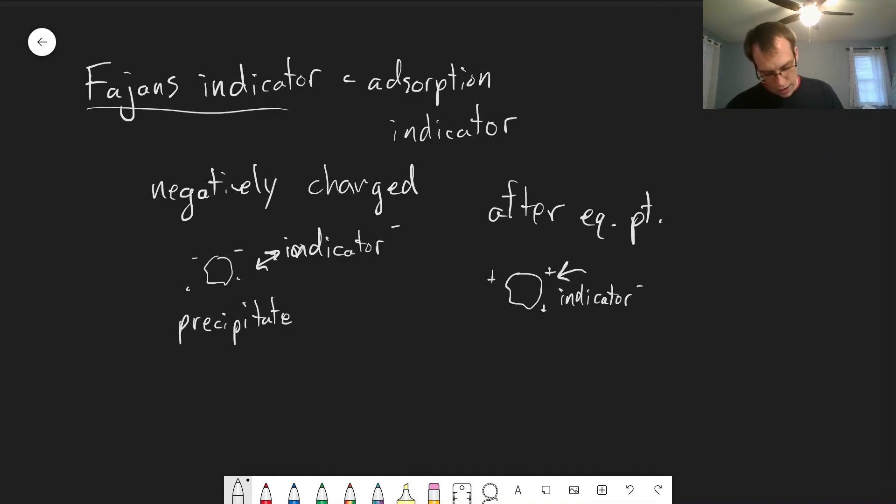And when it adsorbs, it changes color. And so it's that color change that we're looking for to find that we've reached the equivalence point. So it's the switch from the negative to positive, which only happens when we have excess positive ions, which happens once we reach or are just after the equivalence point. And so that is how we use a Fajans indicator. That's physically the manifestation that we see that we've reached the equivalence point.